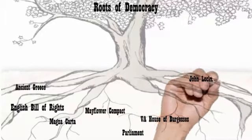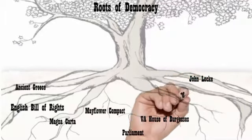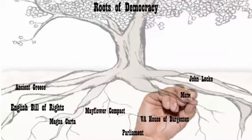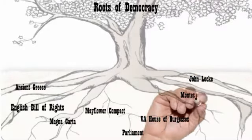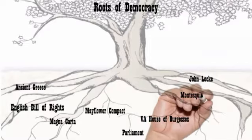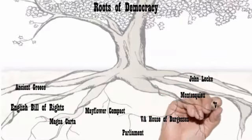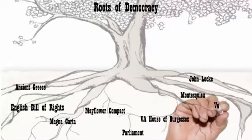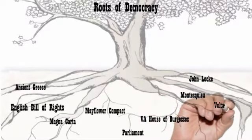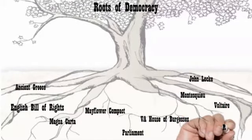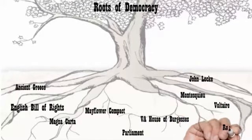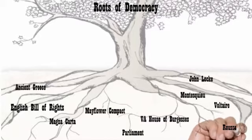The Enlightenment had a huge impact on our government. Thinkers like John Locke introduced us to natural rights — the rights of life, liberty, and property — and that it was the government's responsibility to protect those rights. Montesquieu is the guy who brought in the separation of powers and equal branches. Voltaire was all about free speech.